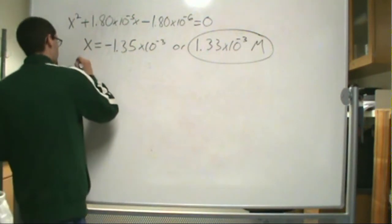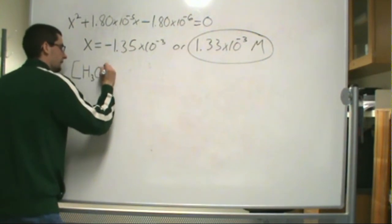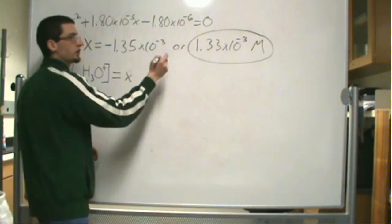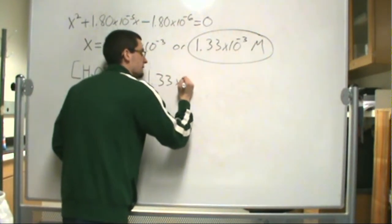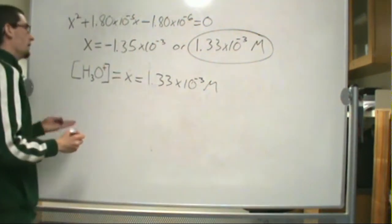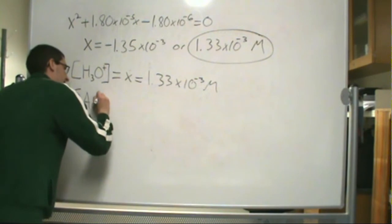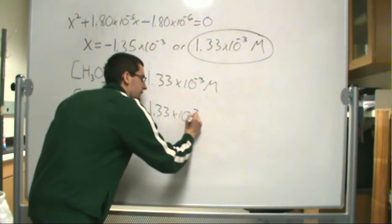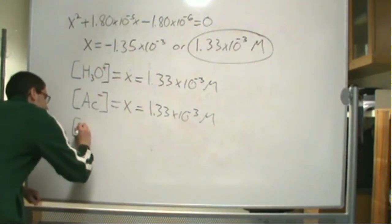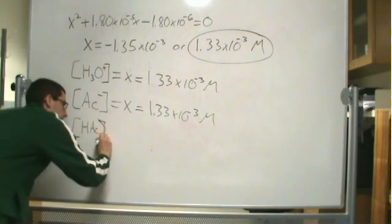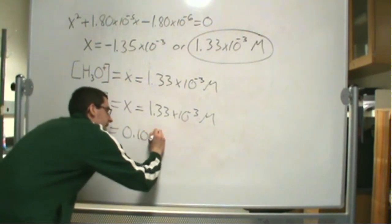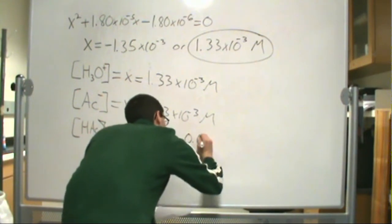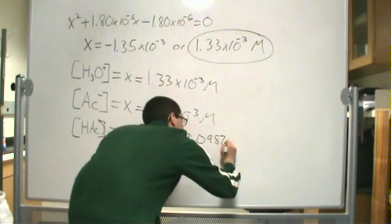Now, if you go back to your ICE diagram, you remember the H3O+ ion. At equilibrium, the concentration of this was equal to X, which we just solved for. So 1.33 times 10 to the minus 3 molar. This is also the same value for acetate anion, which was equal to X, which was also equal to 1.33 times 10 to the minus 3 molar. And our concentration of acetic acid was equal to 0.10 minus X, which is equal to 0.0987 molar.